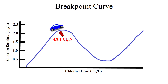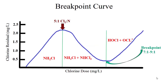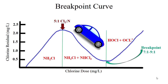In this example, the free ammonia concentration is 0, the free chlorine residual is 0, and we do not have data on the total chlorine residual. We would be anywhere to the right of the 5-to-1 ratio and to the left of breakpoint on the curve. If we had a free chlorine residual, we'd be somewhere to the right of breakpoint in this area on the curve.